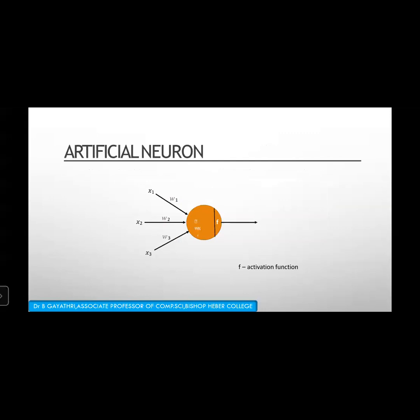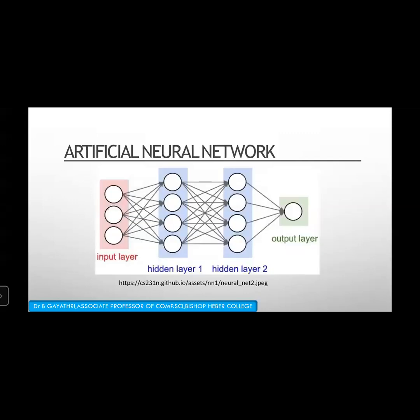Deep learning is a subfield of machine learning inspired by the function of the human brain. In an artificial neuron, we have inputs x1, x2, x3 — signals coming in — and an activation function that processes them. In an artificial neural network, we have input, two hidden layers, and output. The hidden layers work internally so that only the final output is visible in the output layer.